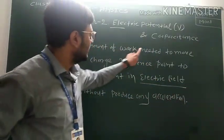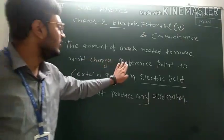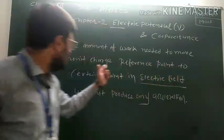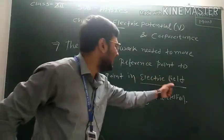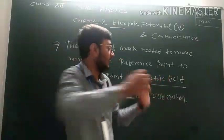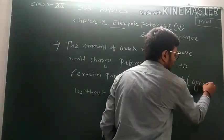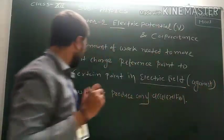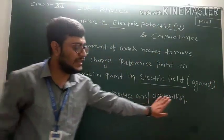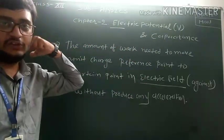The amount of work needed to move a unit charge from a reference point to a certain point in an electric field, or against the electric field, without producing any acceleration — that is called electric potential.